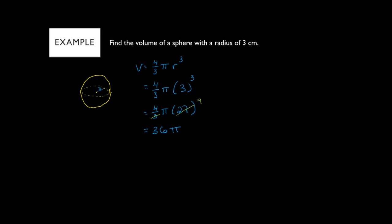Putting 36 times pi in the calculator gives us 113.0973355. Since we started with a whole number we round to a whole number — the digit after the decimal is zero so we truncate — giving us 113. Our units are centimeters cubed, because volume is three-dimensional. Volume units are always cubed, while area units are squared. So the volume of the sphere is 113 cubic centimeters.